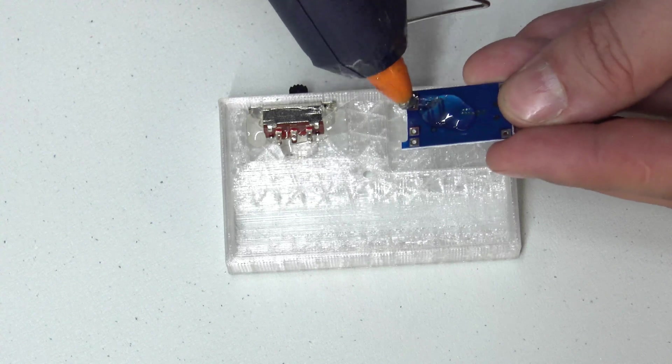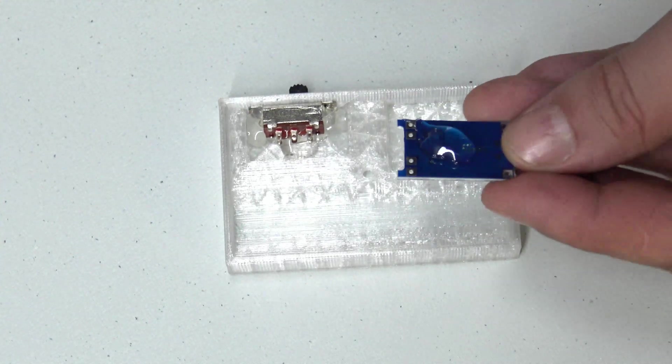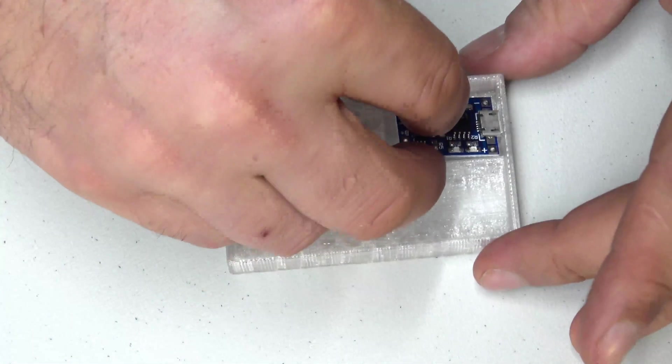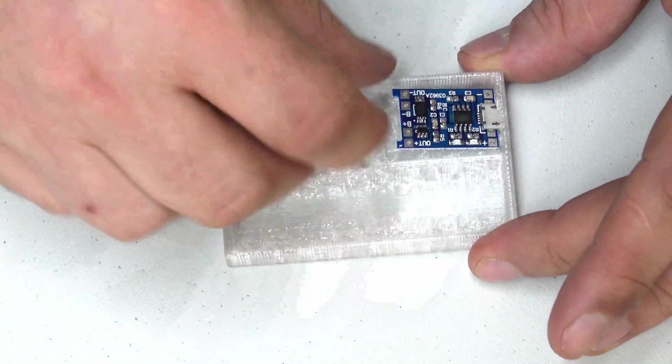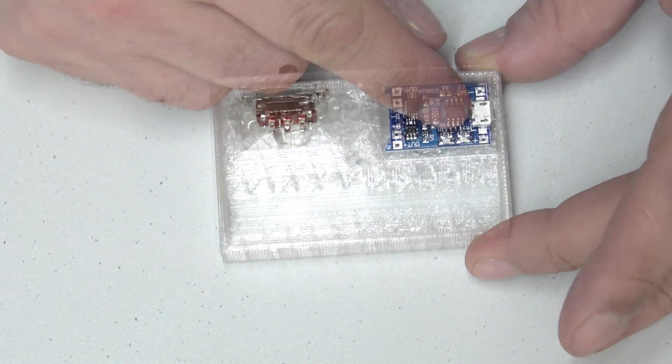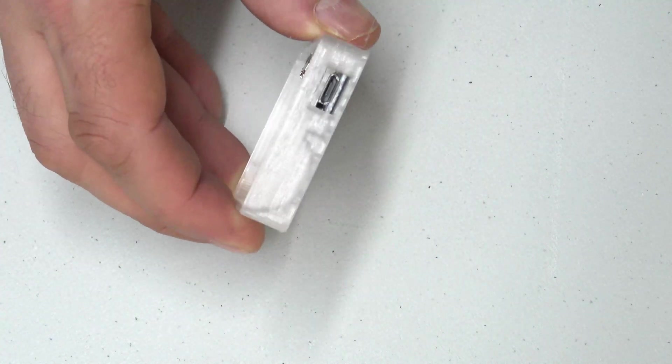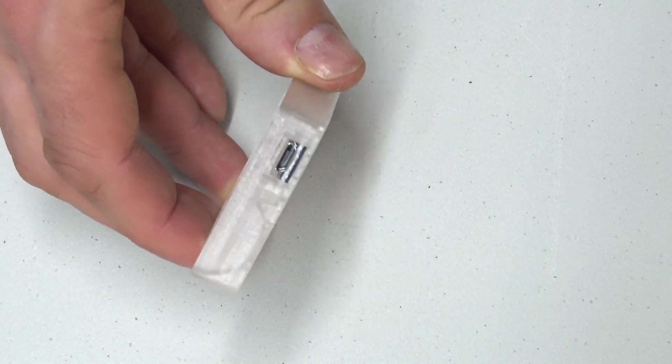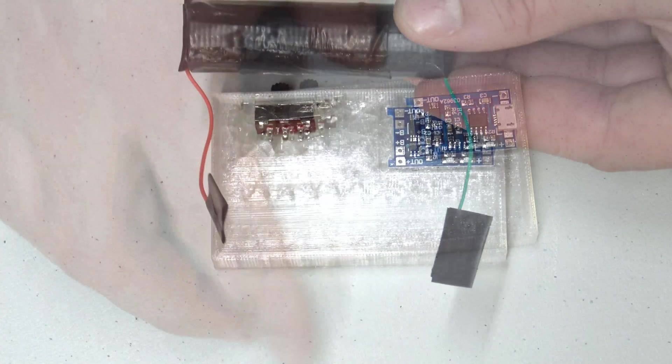Next thing to do is stick the charge PCB in and make sure the charge PCB is aligned correctly to the slot that's designed in the case so that cables will fit in and plug into it so you can charge.